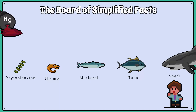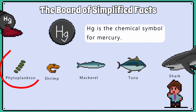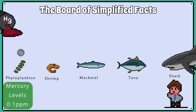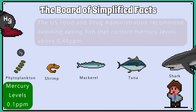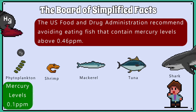Let's use some simplified numbers and say that the mercury levels in each individual phytoplankton, which have absorbed the mercury and are at the bottom of this food chain, is currently at around 0.1 parts per million. This may not seem like much, but the US Food and Drug Administration recommend avoiding eating fish that contain mercury levels above 0.46 parts per million.